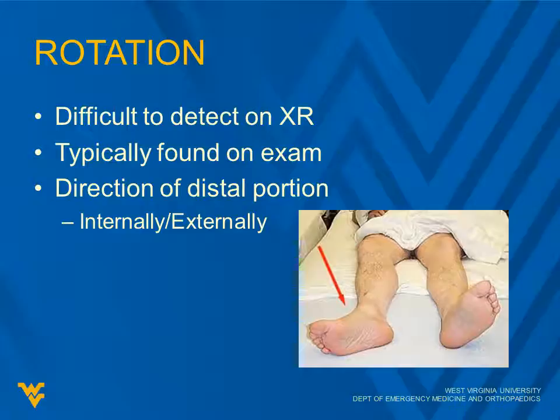Rotation can be difficult to see on an x-ray — it's typically found on exam. It's the direction that the distal portion has rotated, so internally or externally. Which direction do you think this fracture has rotated? That is an externally rotated fracture.